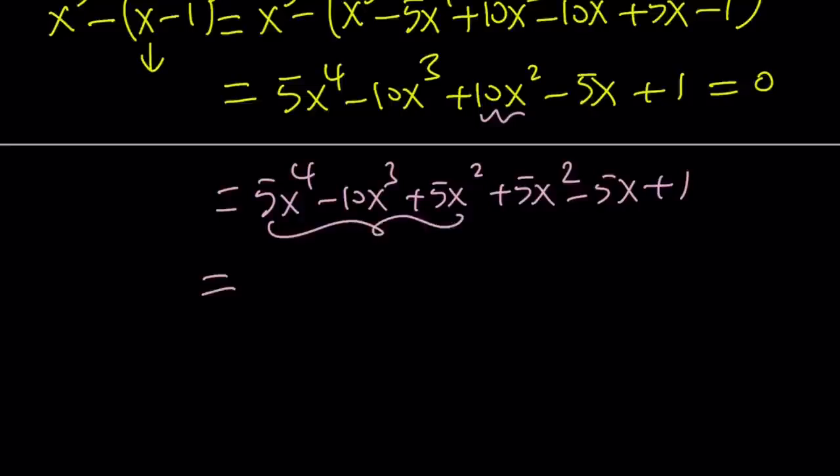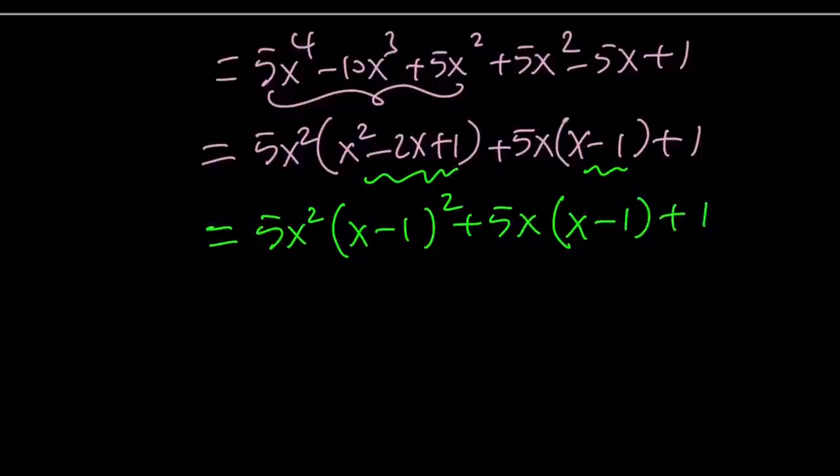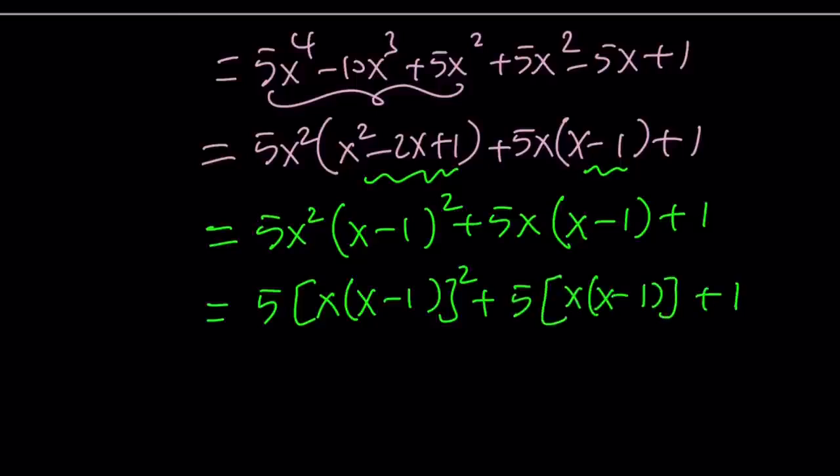We're going to break down this 10x squared into two pieces. So we're going to write it like 5x to the fourth minus 10x cubed plus 5x squared plus 5x squared minus 5x plus one. And then the first three terms we can factor out 5x squared and inside we're going to get x squared minus 2x plus one. Plus 5x times x minus one plus one. Why did I put it in that form? Because this is x minus one squared and this is x minus one, so we can use substitution.